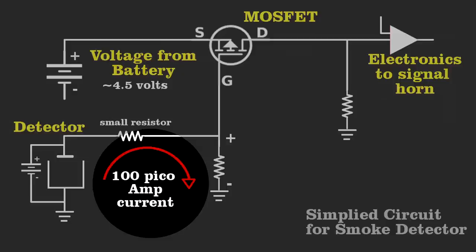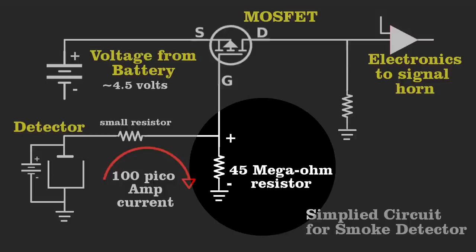Here is where the ionized gas creates the tiny current between the two electrodes I showed you earlier. That current passes through a large resistor and creates a voltage that opposes the battery, and it shuts down current flow through the MOSFET.